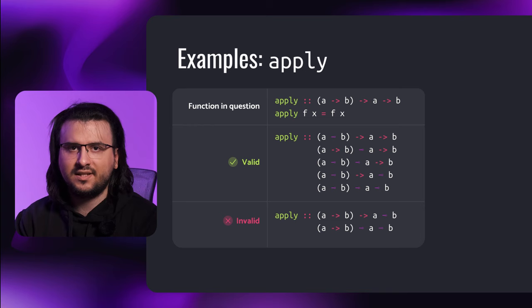Here's an example: the conjunction introduction rule. If from gamma we can prove A, and from the same gamma we can prove B, then from the same gamma we can prove the conjunction of A and B. We're here to dissect a black box that implements the restriction of argument usage. Enter structural rules.